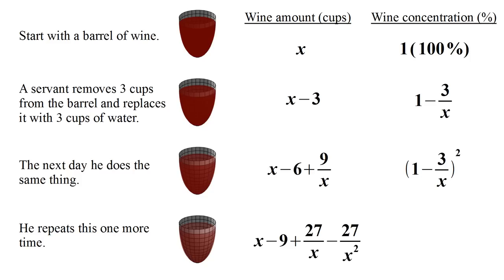This amount divided by the total volume X is how much of the wine concentration is remaining in the barrel. I'll go ahead and simplify this, and it actually ends up being one minus three over X cubed.